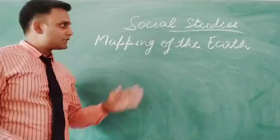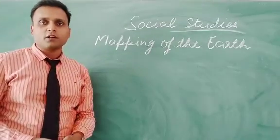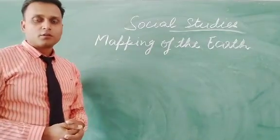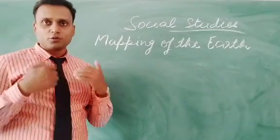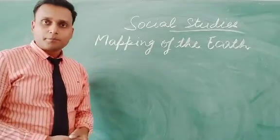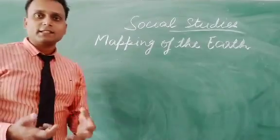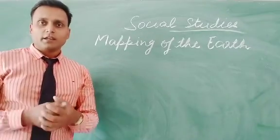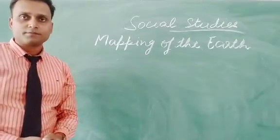After discussing the lesson on Mapping of the Earth, we will be able to find answers to questions such as: what is a globe, what is a map, how many types of maps do we use, what are the elements of a map, and what is called mapping. After completion of this chapter, we are going to get the answers to these types of questions and define different sub-topics under this chapter.